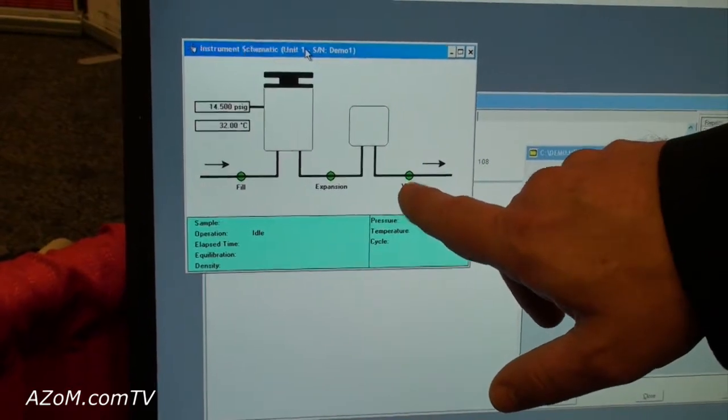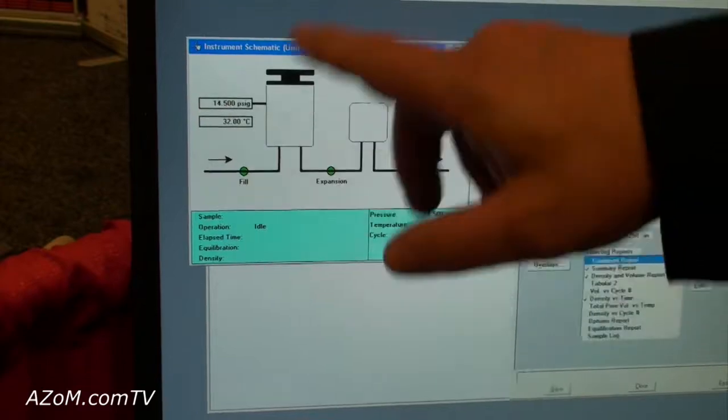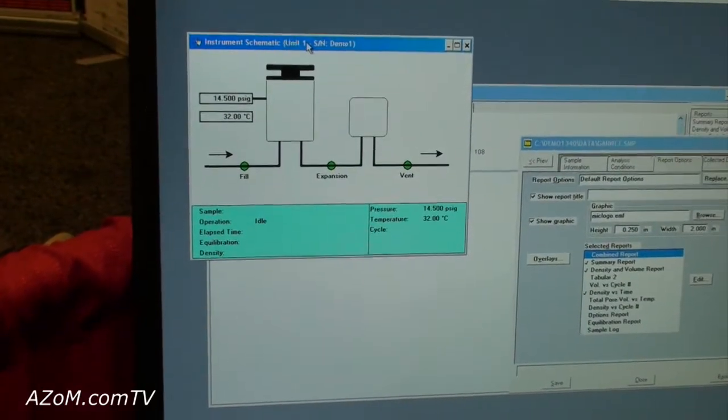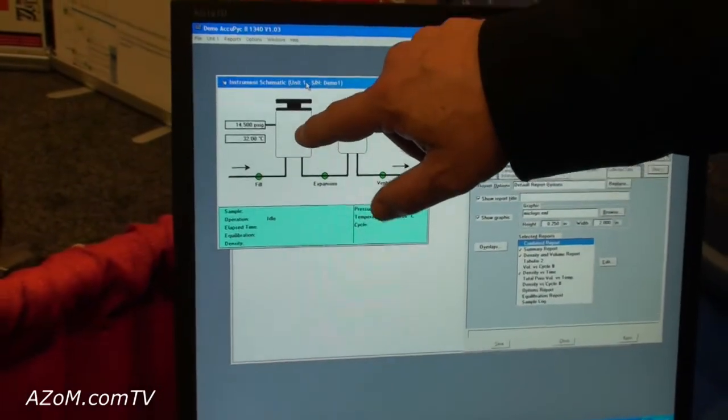And then we permit the gas to expel through an exhaust valve. This cycle gives us the ability to look at, using the ideal gas law, the volume of gas displaced by a sample in the sample chamber.